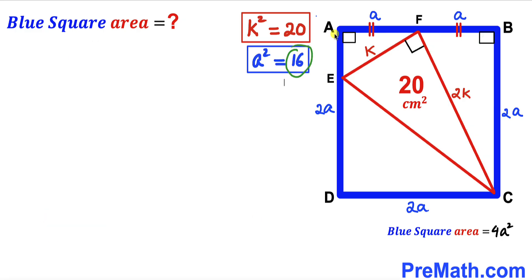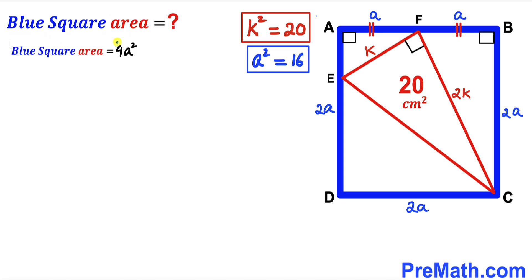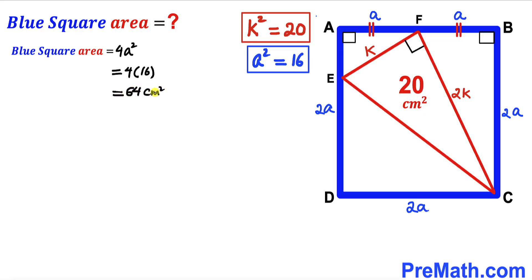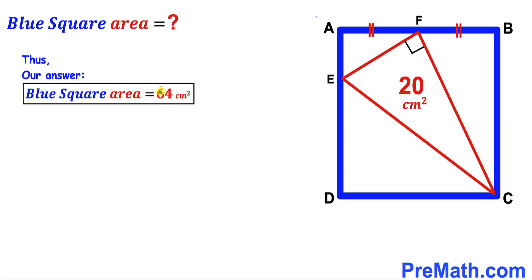So A² equals 16. Now we calculate the area of blue square ABCD. The blue square area equals 4 times A², and since A² equals 16, we get 4 times 16 equals 64 cm². The area of blue square ABCD turns out to be 64 centimeters square. That's our final answer. Thanks for watching, and please don't forget to subscribe to my channel for more exciting videos.